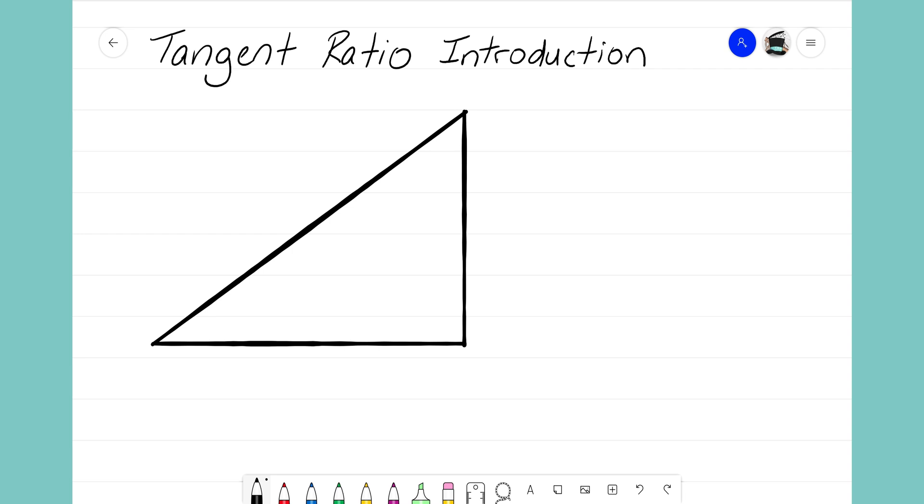We're going to look at this slope triangle and see how we can develop this idea of the tangent ratio. Remember, in a slope triangle we always have a 90 degree angle in the bottom right corner. Our slope triangle is a right triangle, and so this angle here equals 90 degrees.